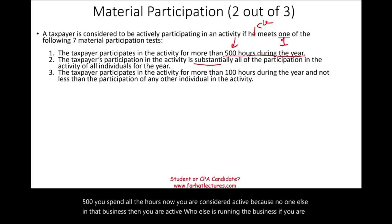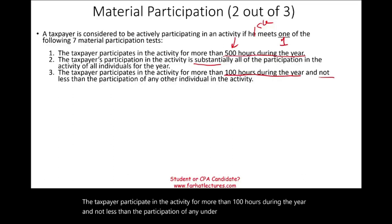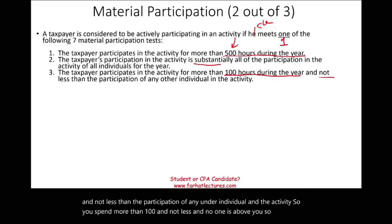Test three: the taxpayer participates in the activity for more than 100 hours during the year, and not less than the participation of any other individual in the activity. So you spend more than 100 hours and no one else participates more than you — you're basically running the show. Therefore, you are considered to have active participation.